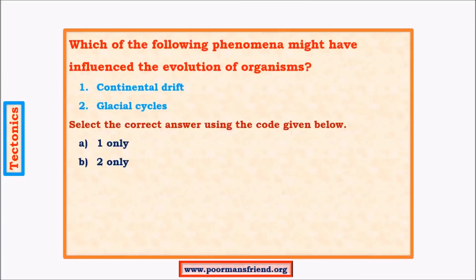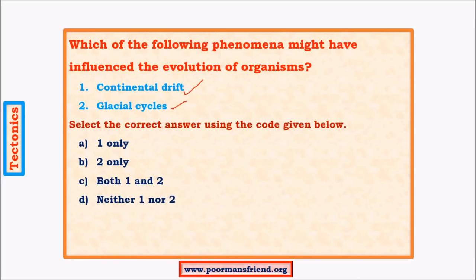A question asked in 2014 UPSC prelims: 'Which of the following might have influenced the evolution of organisms — (1) continental drift, (2) glacial cycles?' These statements are not directly found in books and require conceptual clarity. Continental drift shifted continents from the South Pole towards the equator. Glacial cycles are periods that occurred due to shifting of continents — for example, India experienced glaciation before the breakup of Pangaea but later developed a subtropical climate.